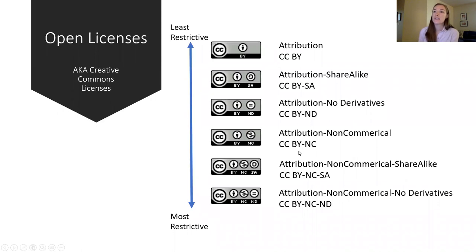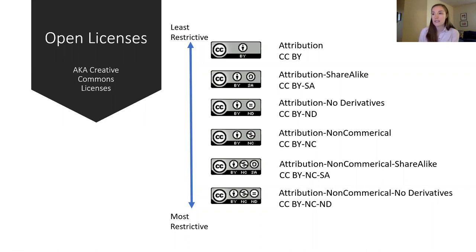So next, what are open licenses? In 2001, a nonprofit organization called Creative Commons was founded with the intention of expanding the availability of creative works that could be reused, revised, or remixed. They have released six different kinds of licenses which allow for certain kinds of use without having to ask for permission. Importantly, the creator never gives up copyright over their work, but allows it to be used and in some cases modified without the trouble of asking for permission.